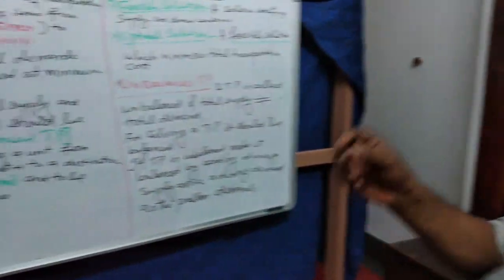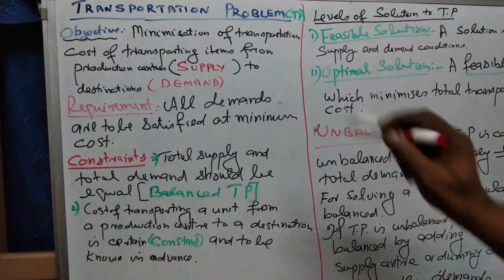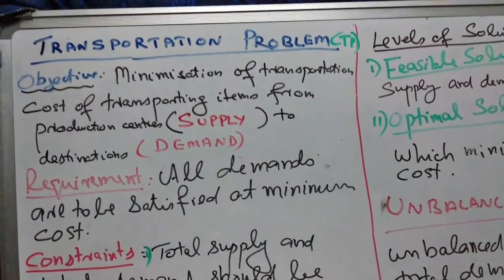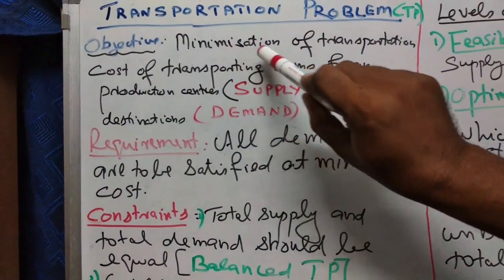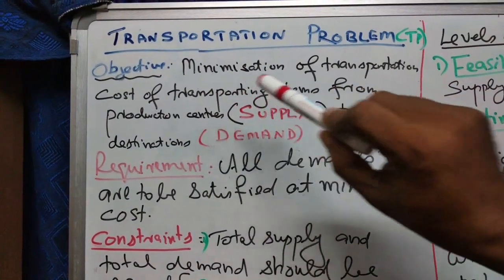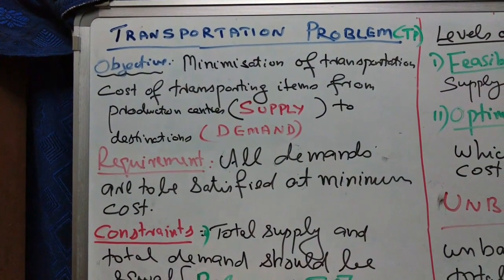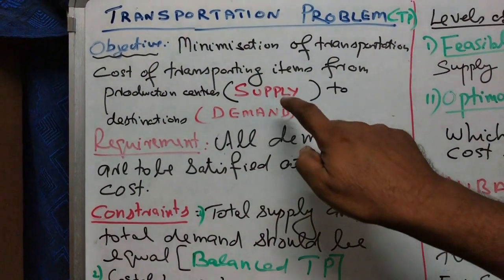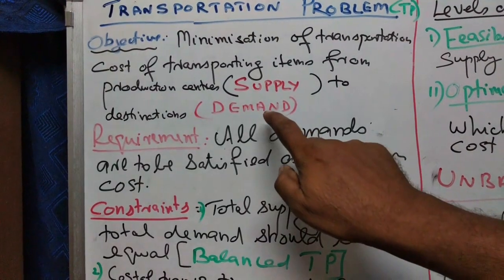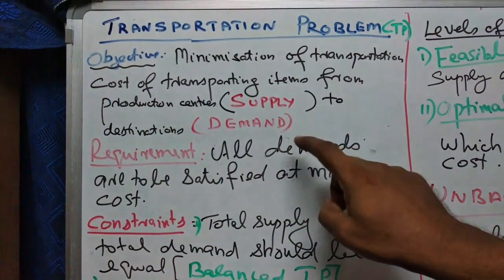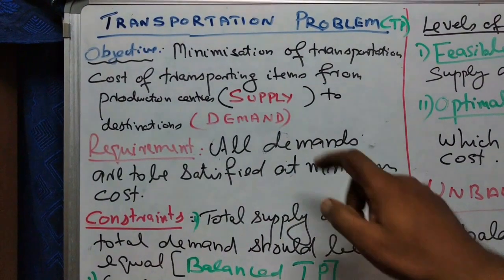I am going to display the transportation problem, denoted by TP in further discussion. The primary objective of the problem is minimization of transportation cost of transporting new items from different production centers to different destinations. The production centers are the supply centers, and the destination is the demand.